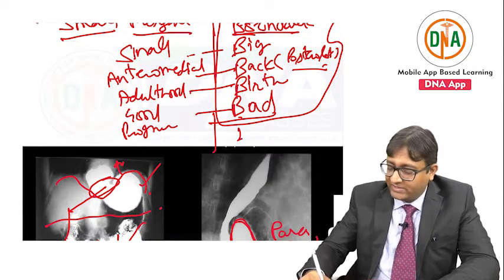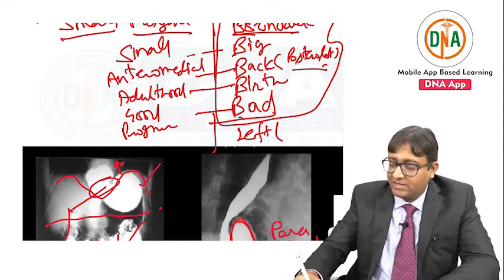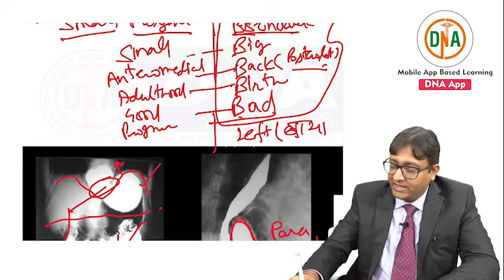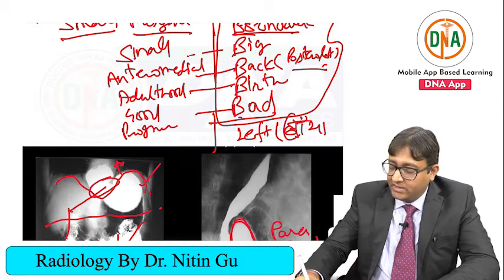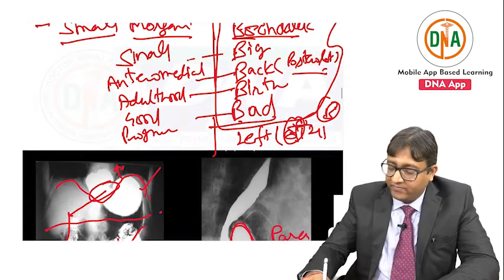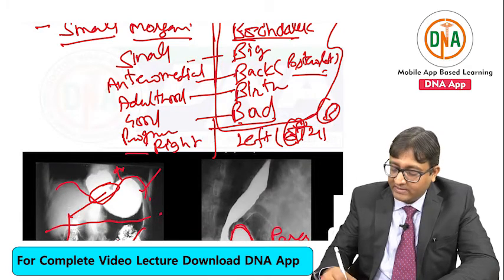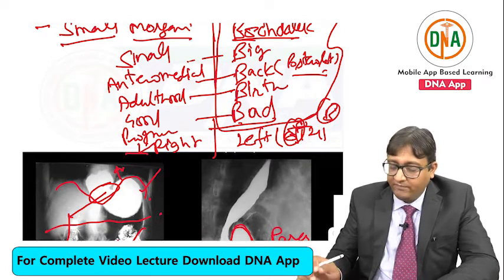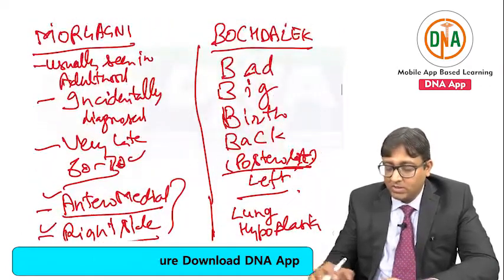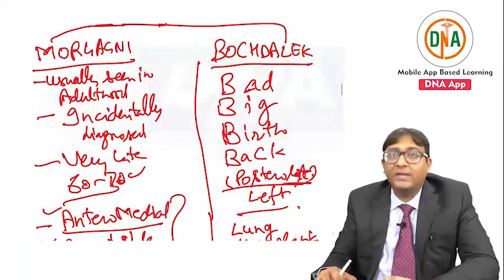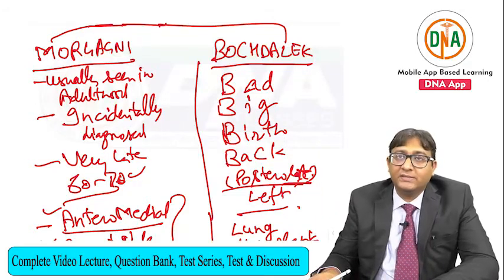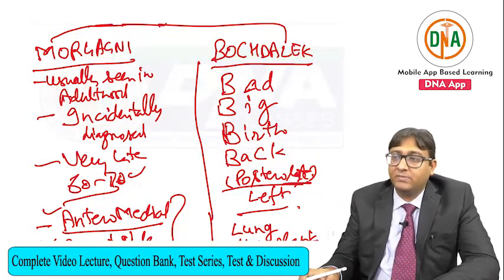One more thing you can remember: Bochdalek is more common on the left side, and in Hindi, left is called 'Baya' — so the B of Baya can also be taken for Bochdalek, reminding you they are on the left side, while Morgagni is on the right side. So that was about Morgagni and Bochdalek, and the diaphragmatic hernias.